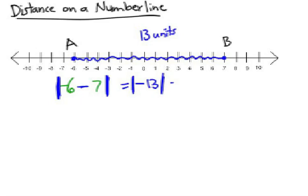which means how far is negative 13 from 0. That would be 13 units. The reason for using absolute value is it doesn't matter what order you subtract. You can do the A minus B point or the B minus A point.